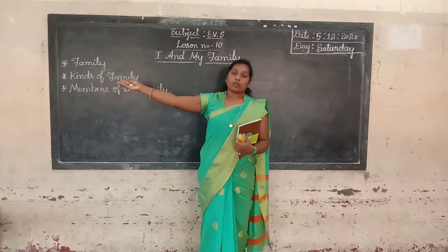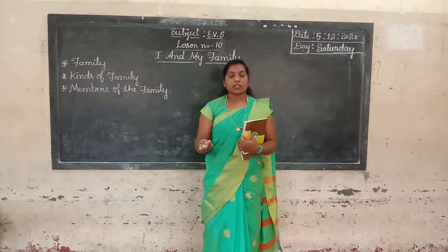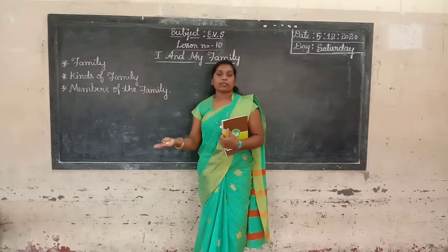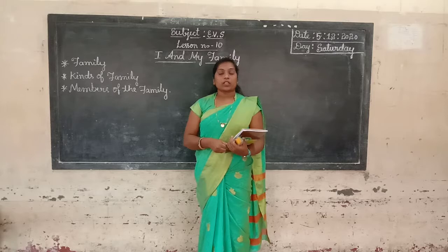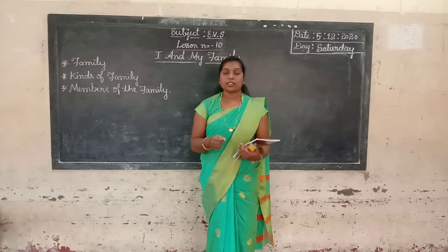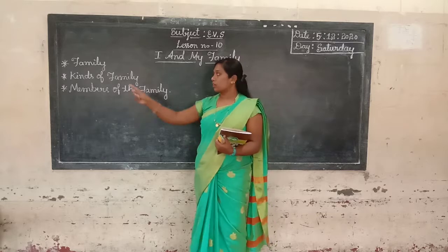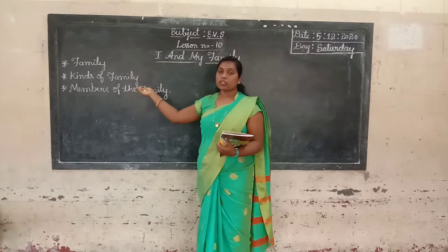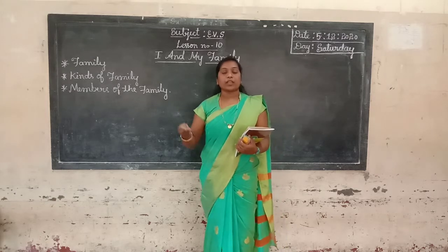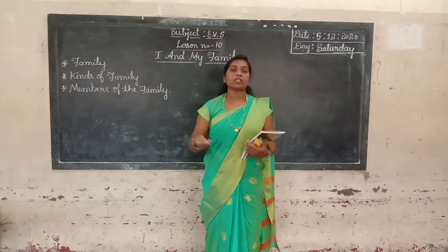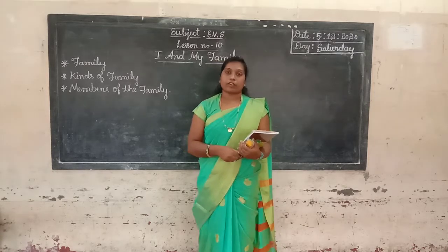So kinds of family. There are two kinds: nuclear family and joint family. What is nuclear family? In a small family, parents and their one or two children live together — it is called nuclear family. And what is joint family? In big families, many members live together — it is called joint family.